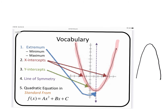The x-intercepts are going to be here and here — a parabola can have zero, one, or two x-intercepts; this one has two. The x-intercepts are where it crosses the x-axis. The y-intercept is going to be right here, where it crosses the y-axis.